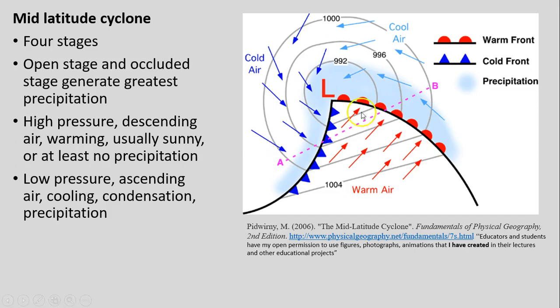This is all related to these mid-latitude cyclones. There's four stages of them kind of generating, what is called cyclogenesis: moving through open stage, occluded stage where it creates the greatest amount of precipitation, and then dissipates after that. There are animations you can go and look up if you're interested more about mid-latitude cyclones. I'm not going to spend too much time talking about them here.